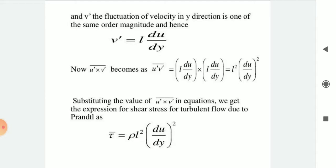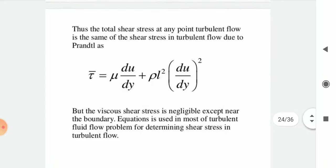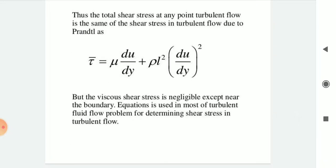Substituting the value of ū'v' into Reynolds' equation, the expression for turbulent shear stress due to Prandtl becomes: τ̄ = ρ·l²·(du/dy)². The total shear stress at any point in turbulent flow is thus τ = μ·(du/dy) + ρ·l²·(du/dy)². However, viscous shear stress is negligible except near the boundary, and this equation is used in most turbulent flow problems for determining shear stress.